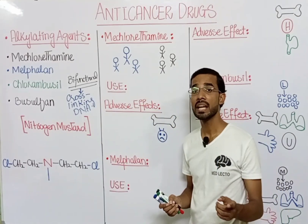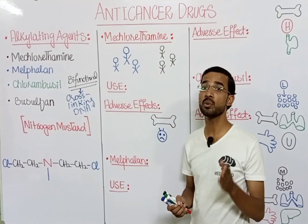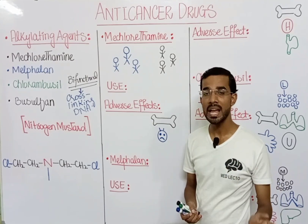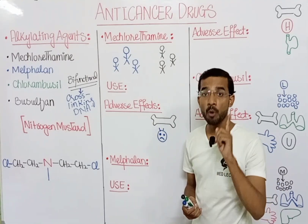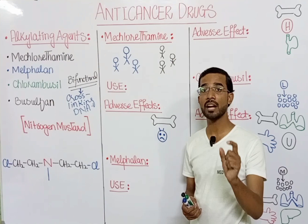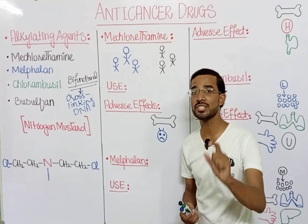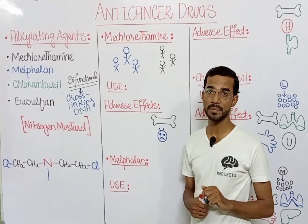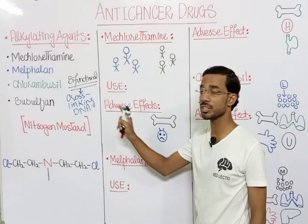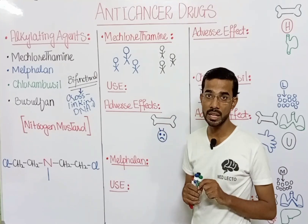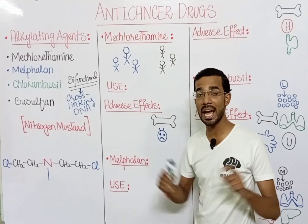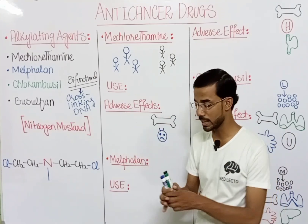Alkylating agents have two categories: monofunctional and bifunctional. Monofunctional alkylating agents attack on a single strand of DNA, but bifunctional agents will attach to both strands of the DNA and form a cross-link.